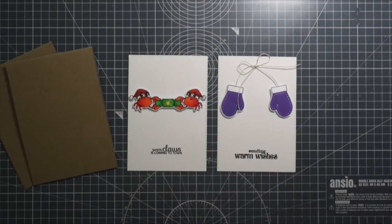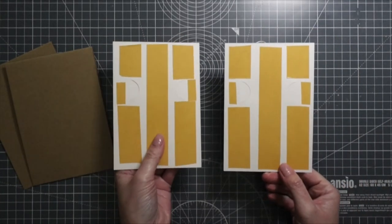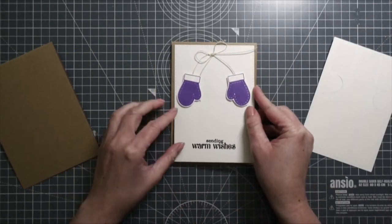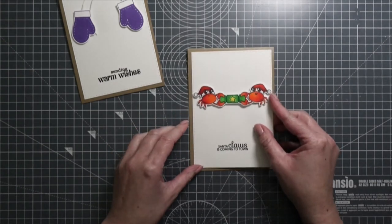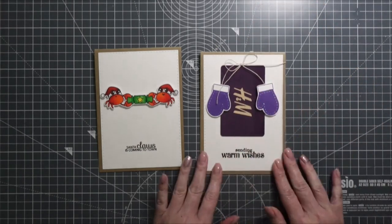I used double-sided tape on the back of the panels and adhered both panels on top of the card bases. I used a card base from kraft cardstock.